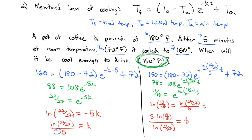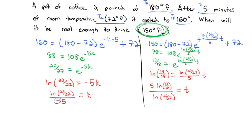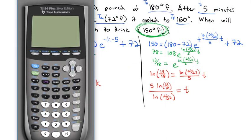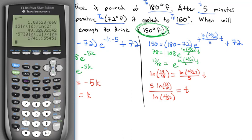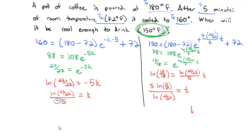Pulling up our calculator, 5 natural log of 13 over 18, divided by the natural log of 22 over 27. We get our final time of about 7.95 minutes. This coffee will be ready to drink in almost eight minutes.